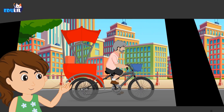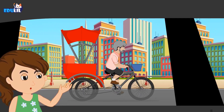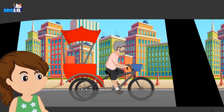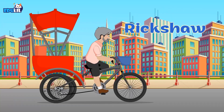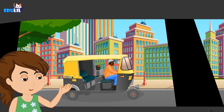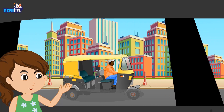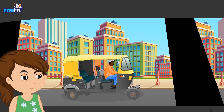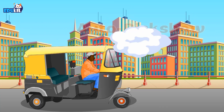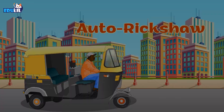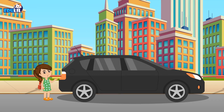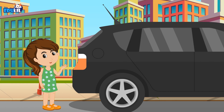This is a rickshaw. A rickshaw has three wheels. An auto rickshaw has three wheels too. Sometimes I travel in an auto rickshaw. There are so many things people use to travel on land. Do you know of any other means of land transport?